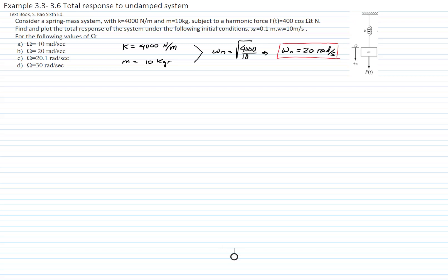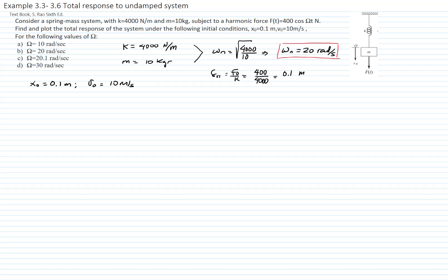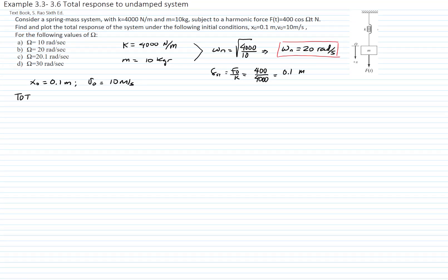The static deflection of the problem is the force divided by the spring constant. The force magnitude is 400 N divided by 4,000, giving us 0.1 m — the static deflection due to the external force. The initial conditions are: initial displacement x₀ = 0.1 meters, and initial velocity = 10 meters per second.